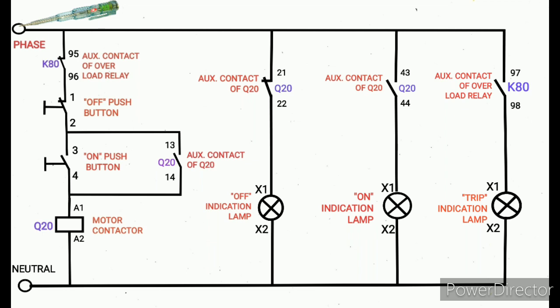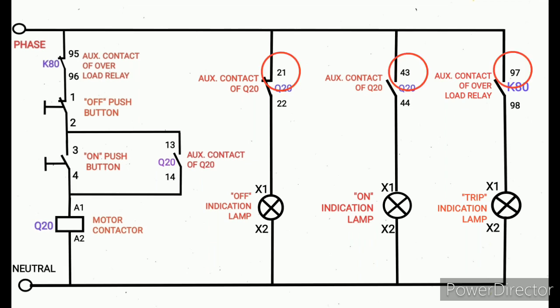After that, where the phase is going, where the phase line is looped, all the terminals we need to check. Here: auxiliary contact of Q20 21, auxiliary contact of Q20 43, and the auxiliary contact of overload relay. All the terminals we need to check. If the tester glows, the terminal's phase is okay. Otherwise, if it has any loose contact, we need to correct.